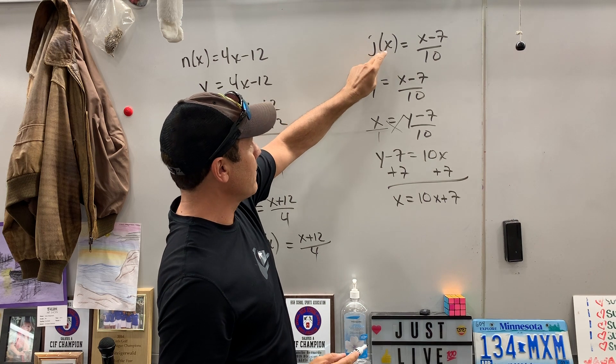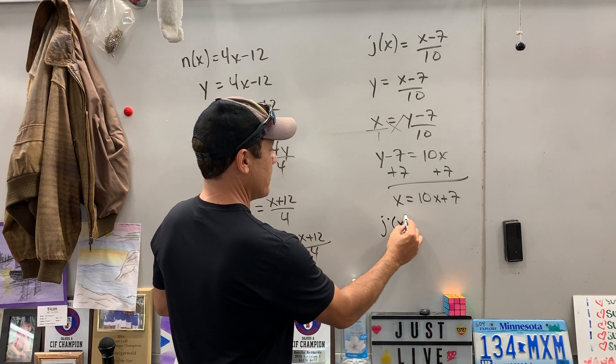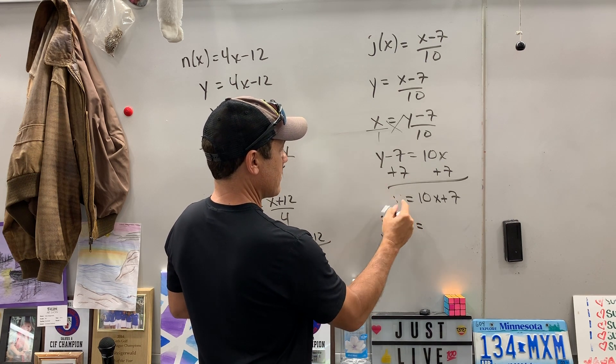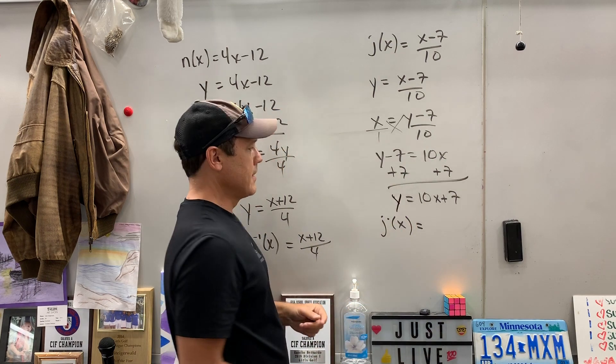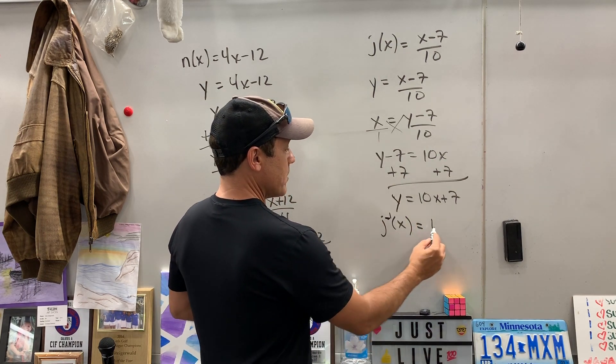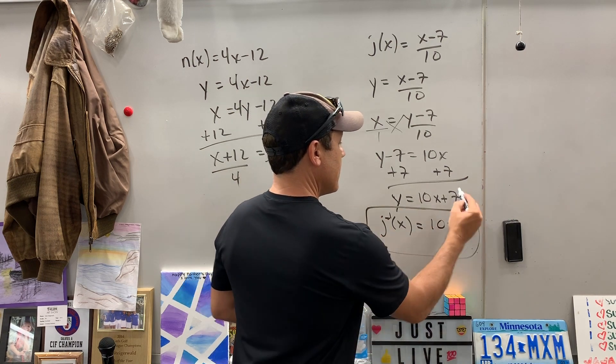It is j. We got a j of x. We got to find the inverse. So the inverse function is equal to, why did I put a y here? Excuse me. That's a y. Okay, the inverse function of j of x is 10x plus 7. And there you go.